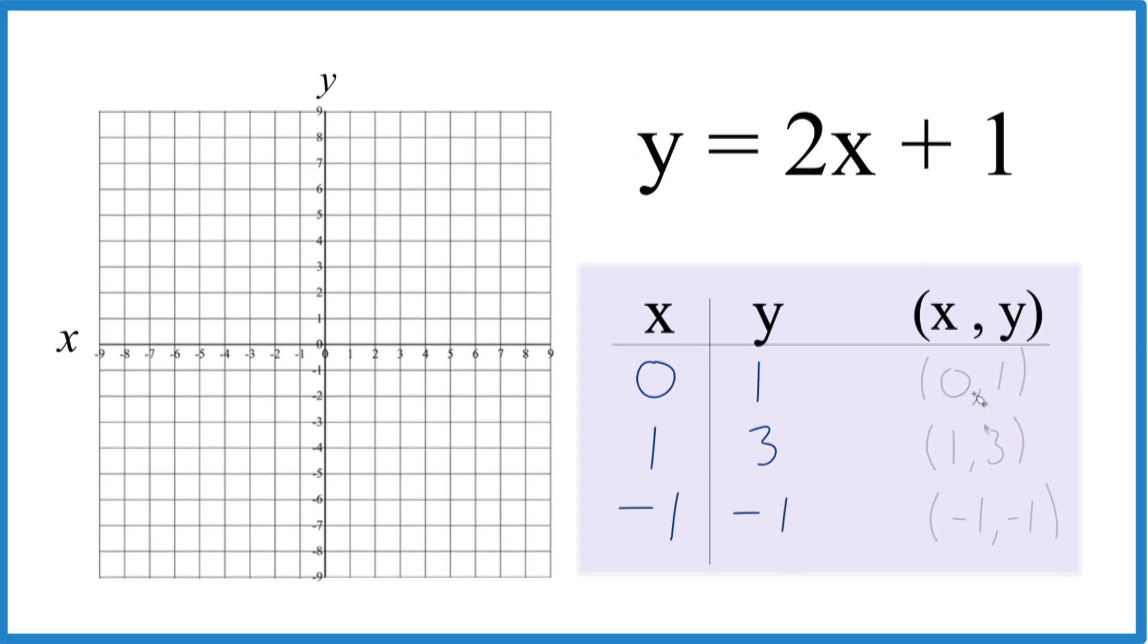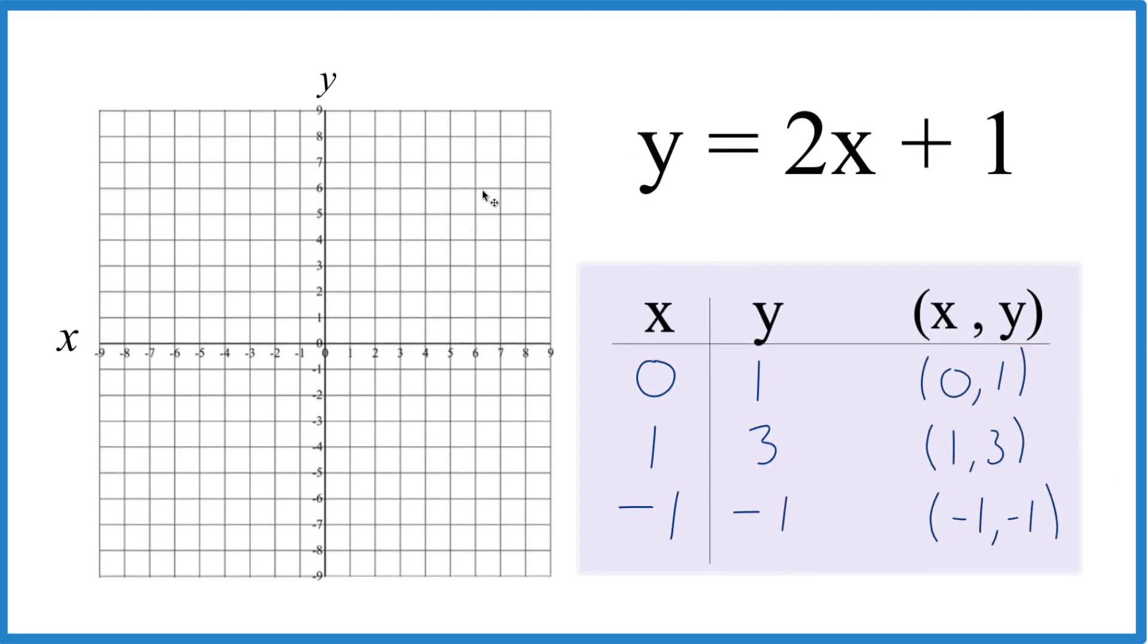So these are the points that we're going to graph here for the equation y equals 2x plus 1. We start out with x is 0, y is 1. Then x is 1, y is 3. We could do it with two points, probably better to use 3 in case we made an error. x is negative 1 and y is negative 1 right there.